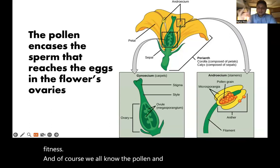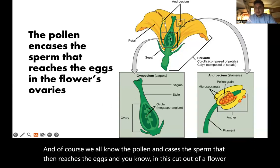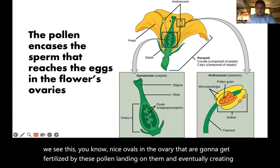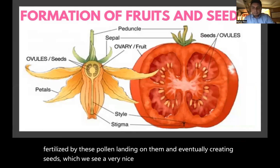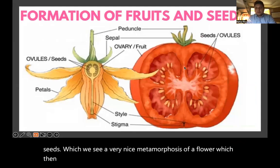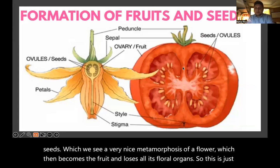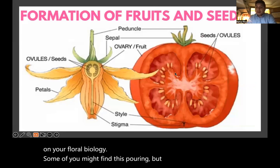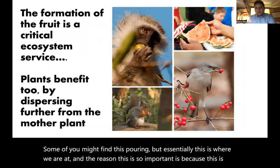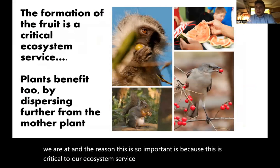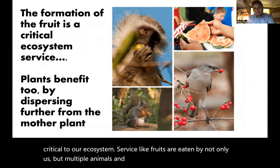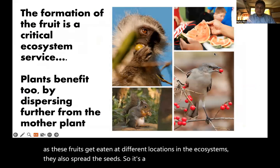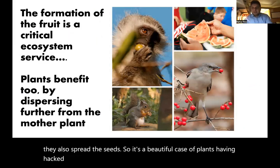Pollen encases the sperm that then reaches the eggs. In this cutout of a flower, we see ovules in the ovary that are going to get fertilized by this pollen landing on them, eventually creating seeds — a nice metamorphosis of a flower which then becomes the fruit and loses all its floral organs. This is critical to our ecosystem service: fruits are eaten by not only us, but multiple animals, and as these fruits get eaten at different locations in the ecosystem, they also spread the seeds. It's a beautiful case of plants having hacked the system to basically spread.